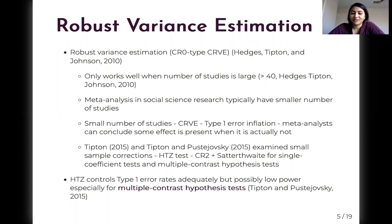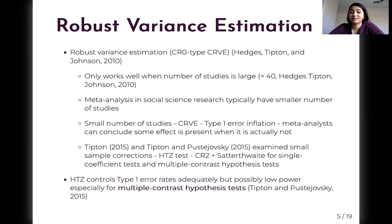Tipton 2015 and Tipton-Pustejovsky 2015 examined several small sample corrections for single coefficient tests and for multiple contrast hypothesis tests, and both recommended a method called the HTZ test — a CR2 correction for RVE plus Satterthwaite degrees of freedom, with an extension for multiple contrast hypothesis tests. The HTZ test was shown to control type 1 error rates adequately, but it may possibly have low power, especially for multiple contrast hypothesis tests.